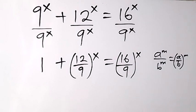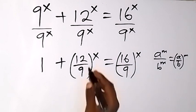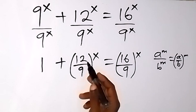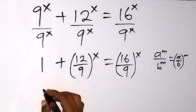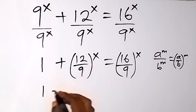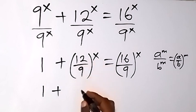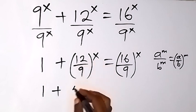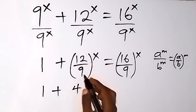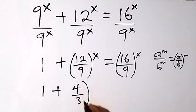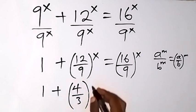We can reduce this inside the bracket — 3 can divide, so we have 12 divided by 3, that's 4, and 9 divided by 3, that's 3, so we have 4 over 3 raised to power x.